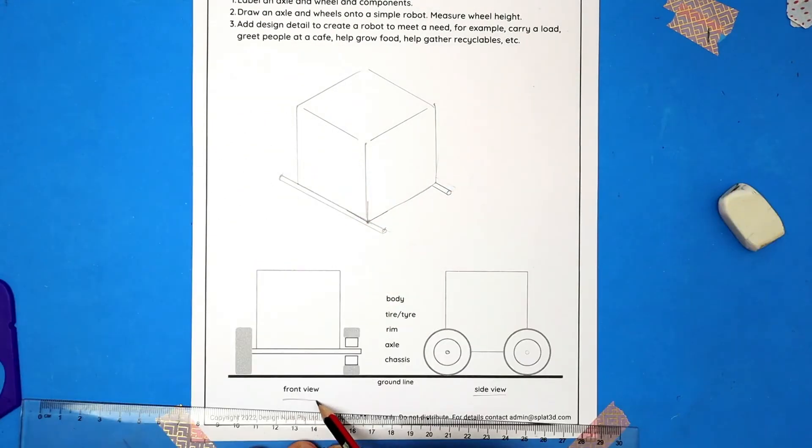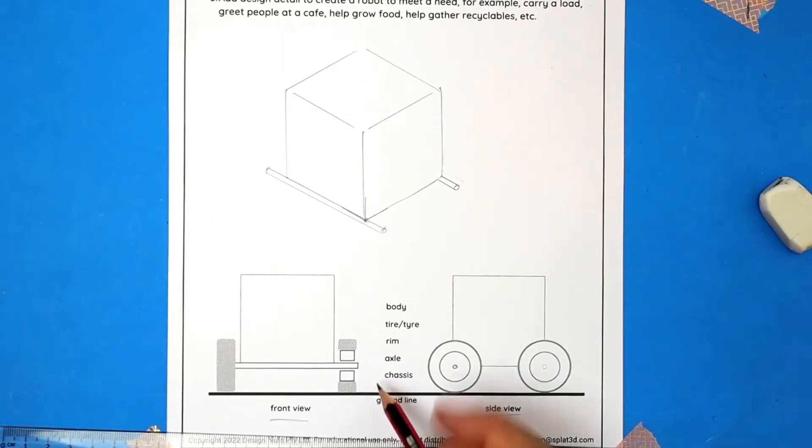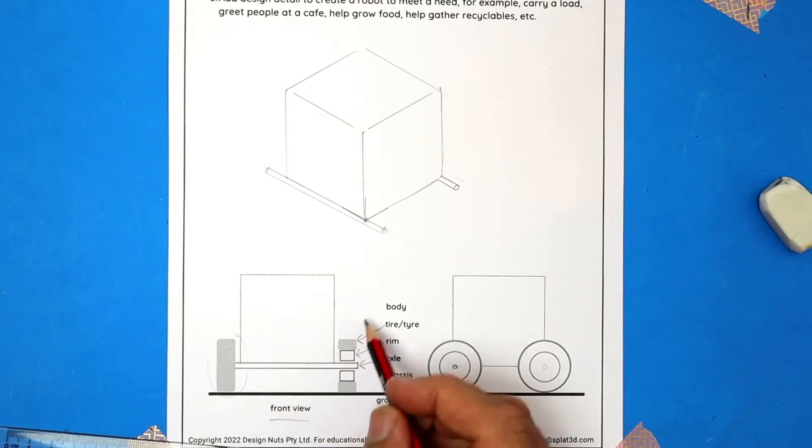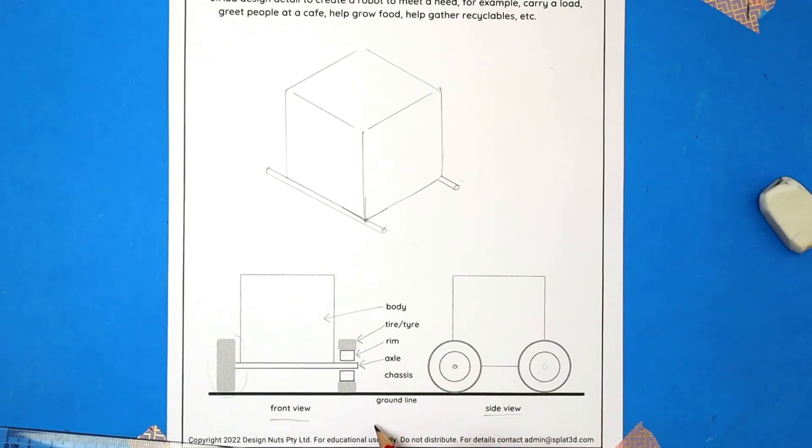Let's name some of the components that we've looked at so far. Here's the axle. And then we have the rim, which holds the tyre. So the tyre is usually the rubber part, and the rim is often steel or alloy. The whole assembly is called a wheel. Here's the body of the vehicle or bot. And the strong part underneath that usually holds the axles is called the chassis. So the body is usually attached onto the chassis.